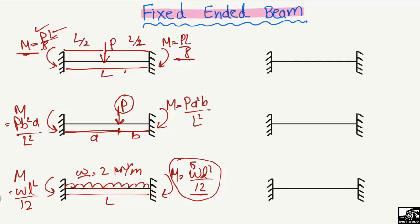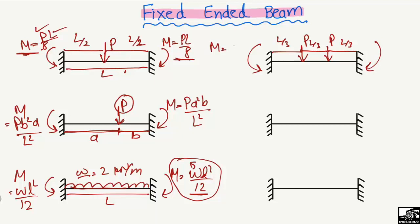The fourth case is when there are two equal concentrated loads P acting at two different points, each at a distance of L/3 from the respective ends, so the loads are spaced equally at L/3, L/3, and L/3. Because of the symmetry, the moment value at both fixed ends is equal to 2PL/9.